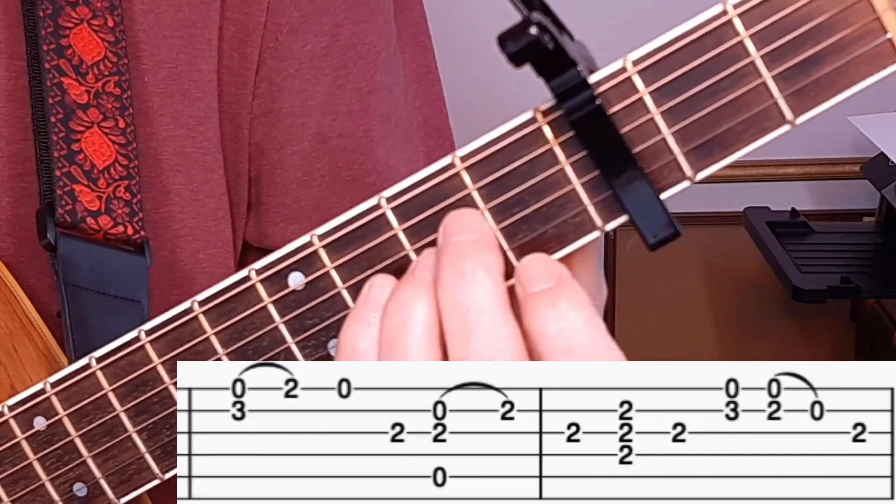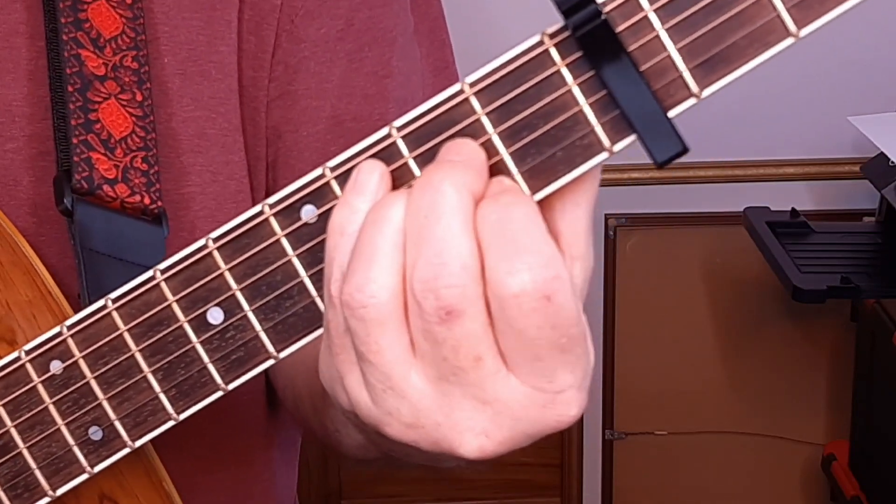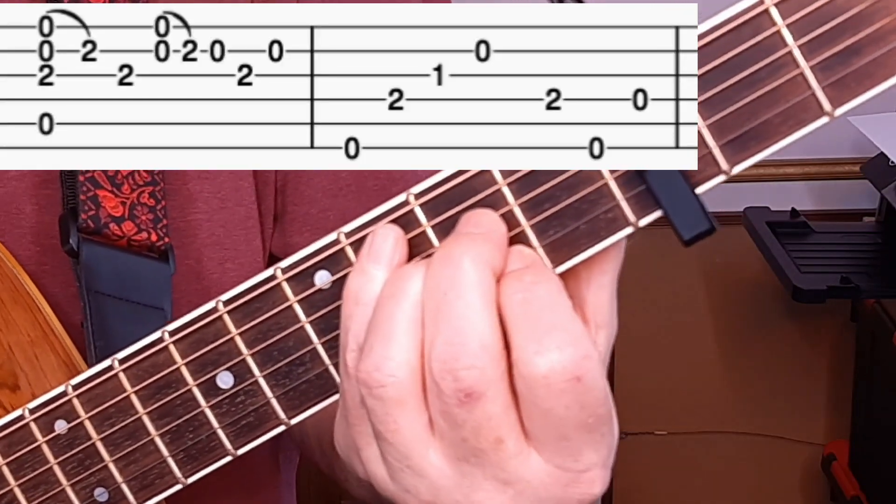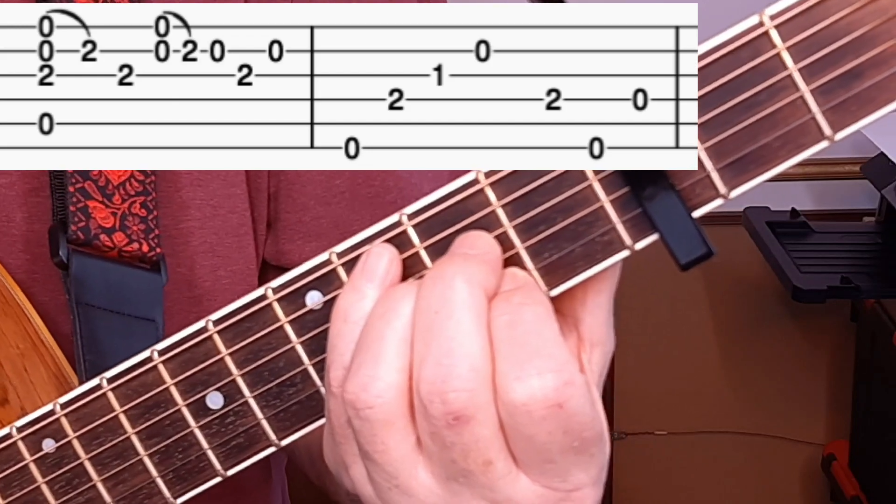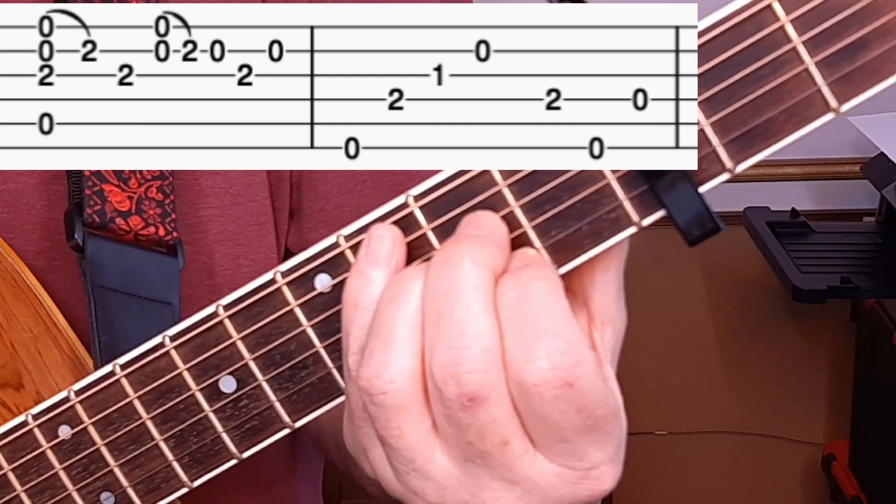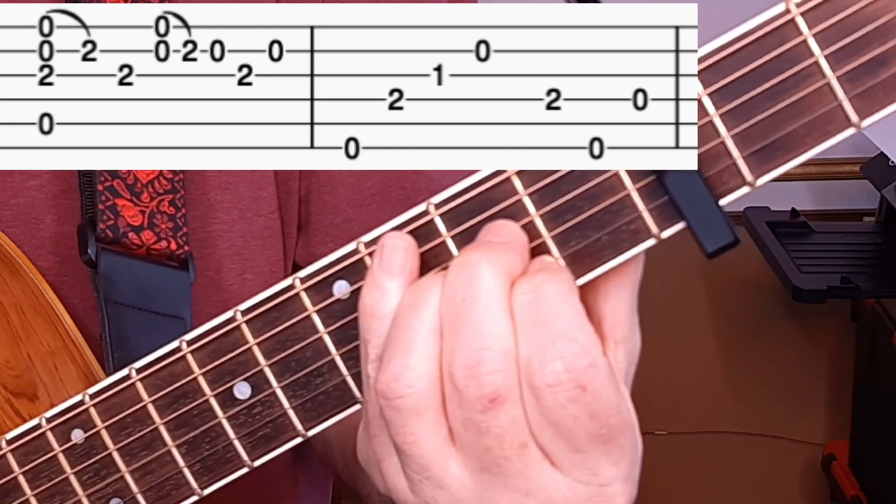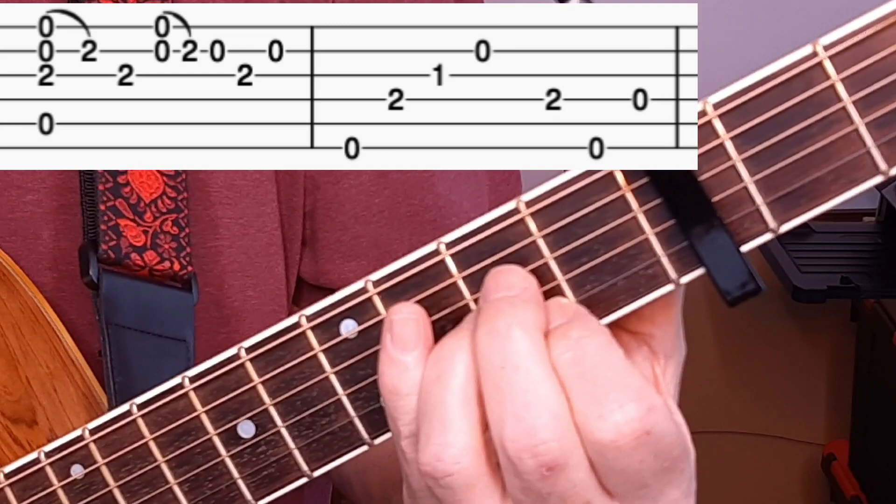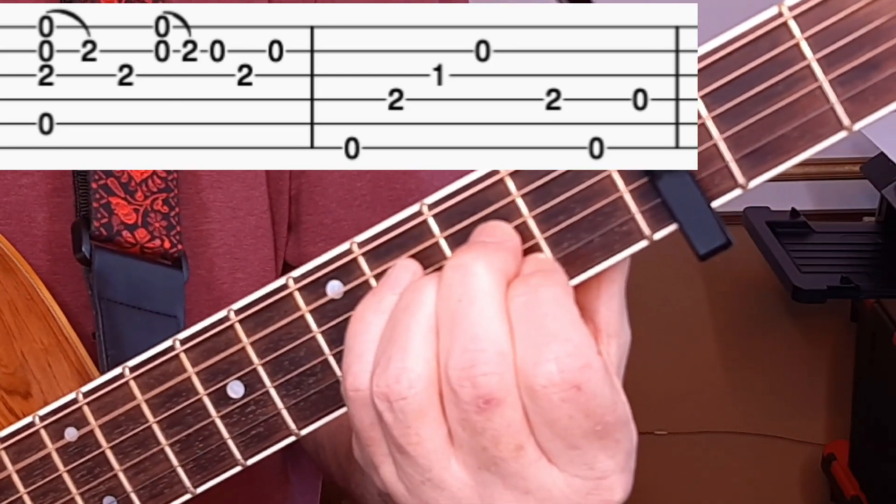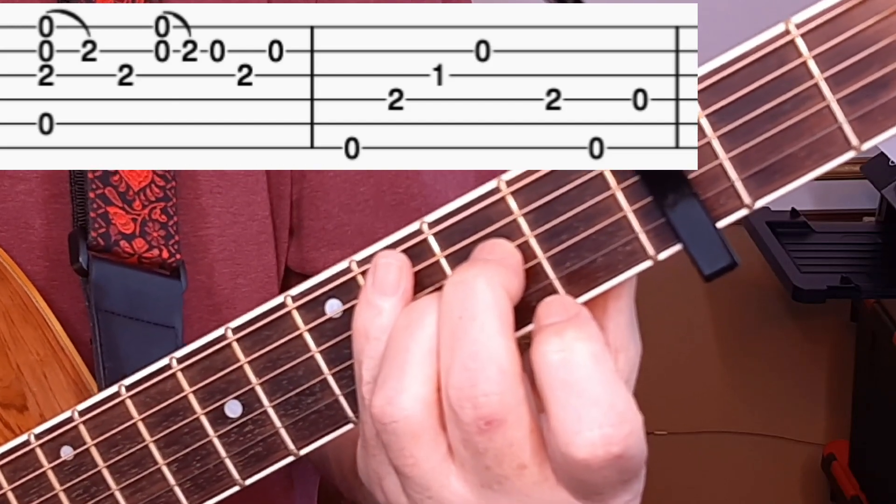And now we're staying on the A for measure five. This little thing here is kind of foreshadowing the riff that's in the verse. In the main verse, in the vocal verse, this riff is a central thing. Here's all of measure five, which is written down there.